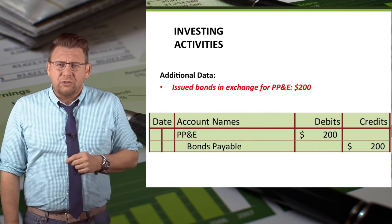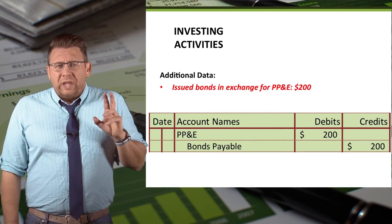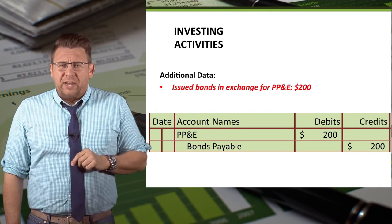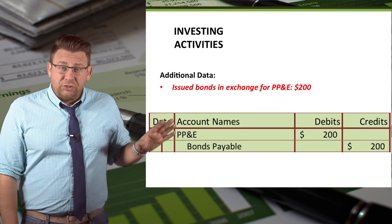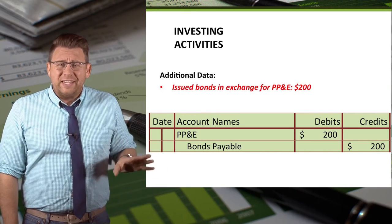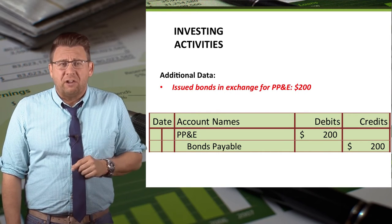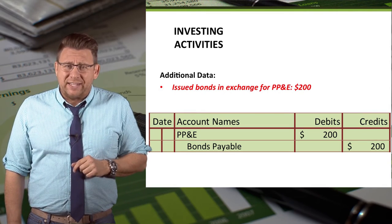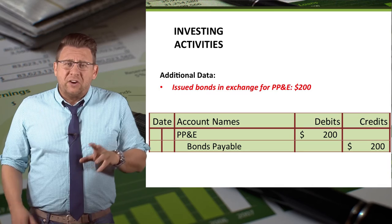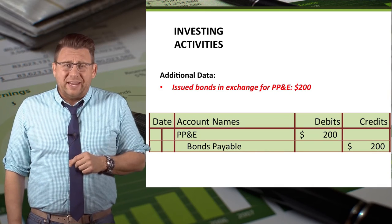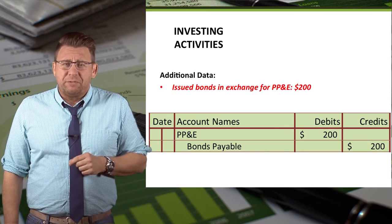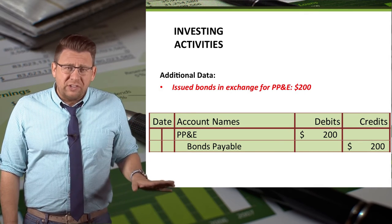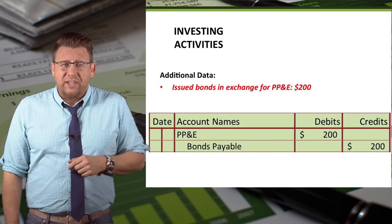The next one is a little trickier. We issued bonds in exchange for Property, Plant, and Equipment. Again, I've shown the journal entry so you can see the cash account is not involved. In fact, this is called a non-cash Investing and Financing transaction. There is a separate video that explains how to report these types of transactions on the Statement of Cash Flows, but since cash isn't involved, it doesn't go in this section.